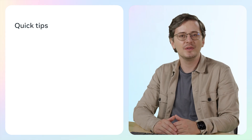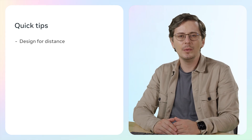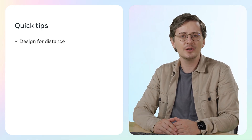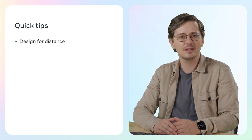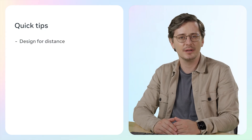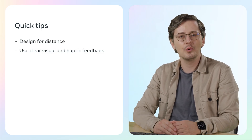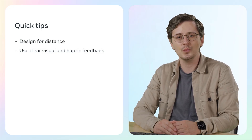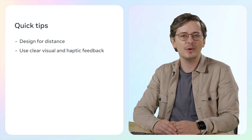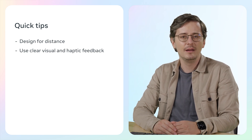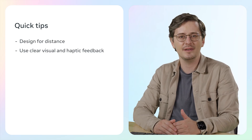To make grab interactions feel smooth and easy on mobile, here are three quick tips to keep in mind. Tip number one: design for distance. On mobile, players tap from farther away, so make sure grabbable objects are big enough, spaced clearly, and easy to target on a touch screen. Tip number two: use clear visual and haptic feedback. When players grab or release an object, provide feedback so they know the action worked. This could be a highlight, sound, or a small vibration — known as haptic feedback — which helps players feel the interaction even on a flat screen and makes grabbing feel more satisfying.